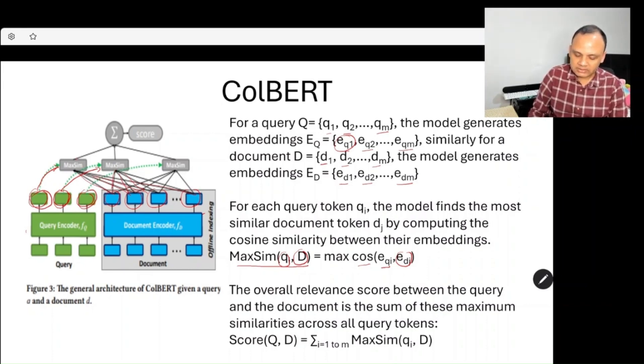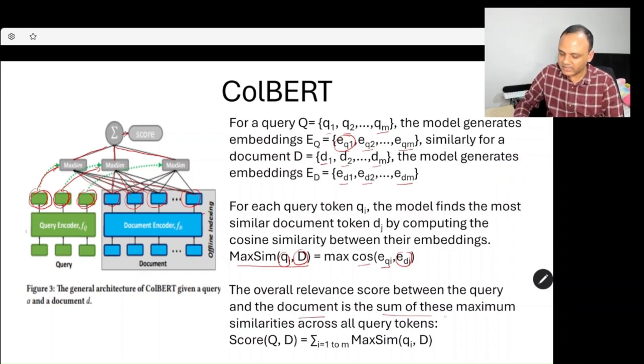Finally, all these MaxSim results get added, providing the final score. The overall relevance score between the query and document is the sum of these maximum similarities across all query tokens.